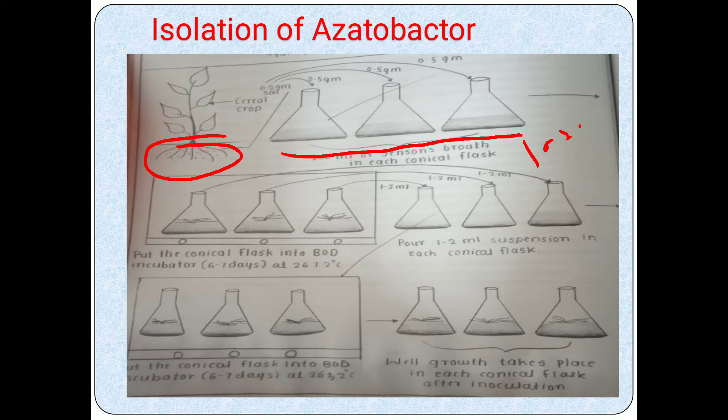Jensen broth is a liquid media. Transfer 100 ml of Jensen liquid media or broth into each conical flask, then transfer 0.5 or 1 gram of soil sample into each conical flask. Then transfer those three flasks into the BOD incubator, each containing 100 ml of Jensen broth plus the soil sample.